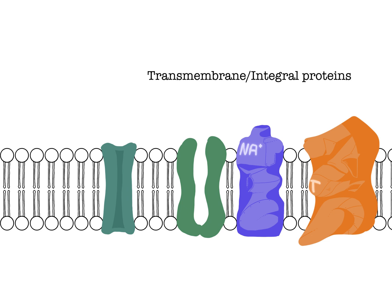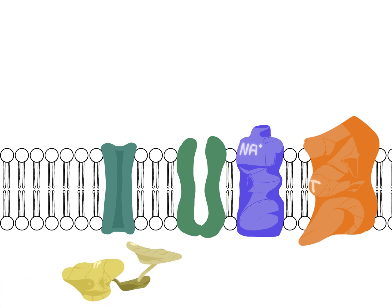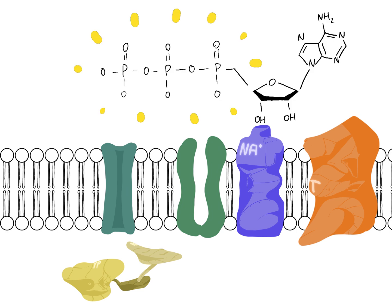For transport that does not take energy, materials move from a higher concentration to a lower concentration naturally. For transport that do take energy, transport proteins use energy from ATP, which are molecules that store energy in their phosphate groups.